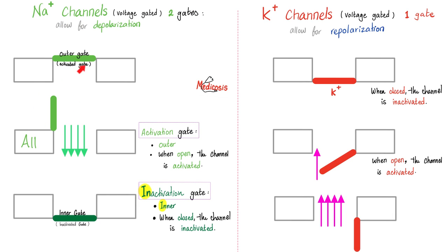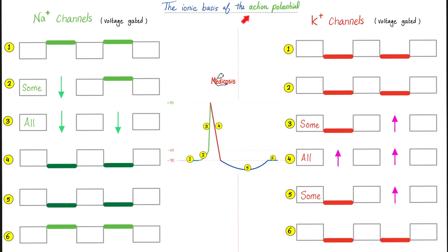Sodium channels, two gates. The outer one is known as the activation gate, because when it opens, sodium comes in depolarization. However, the inner one is the inactivation gate, because when it closes, depolarization is over. The inner is the inactivation gate. The ionic basis of the action potential was discussed before: stage one, stage two, stage three, stage four, stage five, stage six. Pause and review.